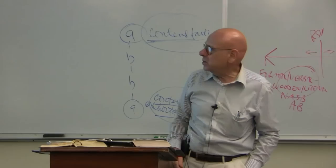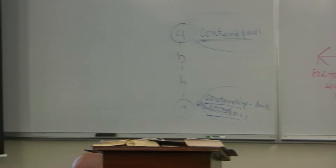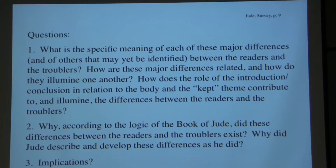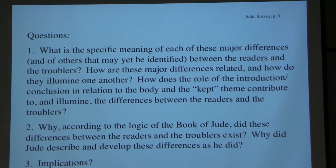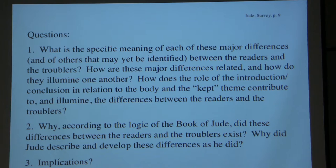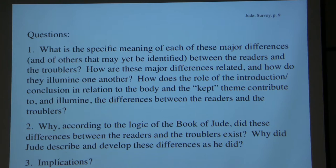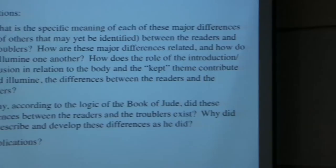We raise definitive, rational, and implicational questions regarding this. What is the specific meaning of each of these major differences between the readers and the troublers? How are these major differences related to each other and how do they illumine one another? How does the role of the introduction and conclusion in relation to the body, and the 'kept' theme, contribute to and illumine these differences? Rational questions: why, according to the logic of the book of Jude, did these differences between the readers and the troublers exist? Why did Jude describe and develop these differences as he did? And what are the full theological implications?